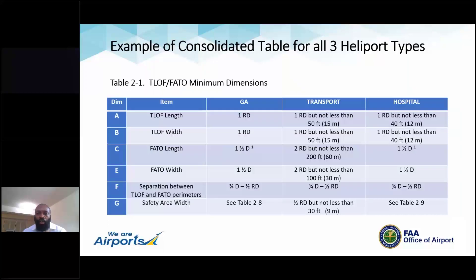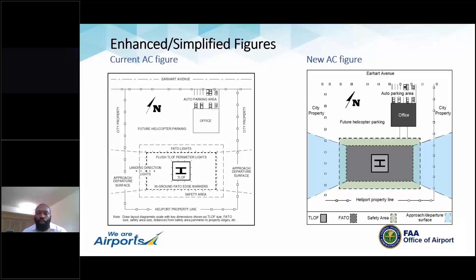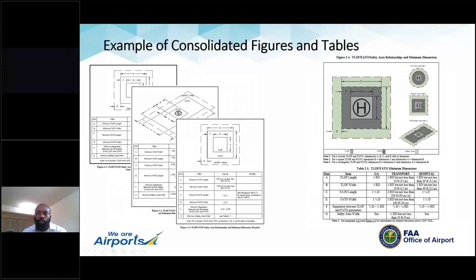Here's an example of that consolidation. A table that pretty much repeated itself in each chapter for GA, transport, and hospital is being consolidated into one table within the heliport design chapter. This theme recurs throughout the document. Here's how the figures looked in the current version of the AC, and here is how the new figure would look — it's easier to follow, and feedback so far has been largely positive. Similarly, where there are essentially three figures making the same point but just for different types of heliports, we're looking to consolidate into one figure.